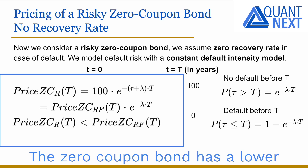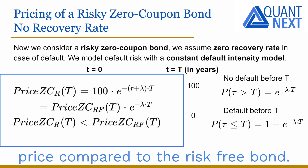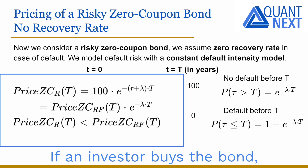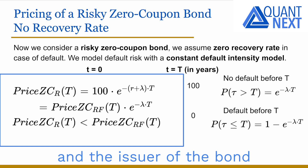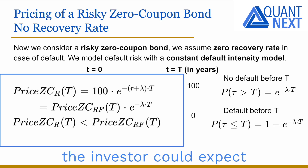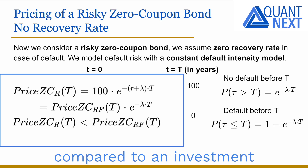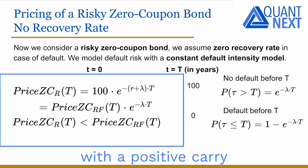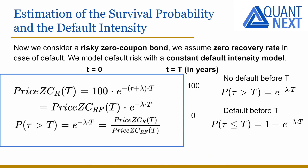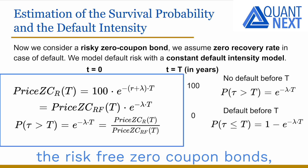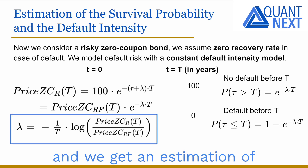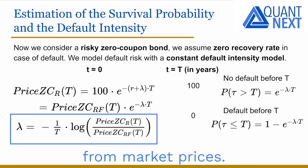The risky zero coupon bond has a lower price compared to the risk-free bond. If an investor buys the bond, holds it until expiry, and the issuer does not default, the investor could expect a higher return compared to an investment in the risk-free bond — a positive carry to compensate for the default risk. The survival probability can be estimated as the ratio between the prices of the risky and the risk-free zero coupon bonds, giving an estimation of the default intensity from market prices.